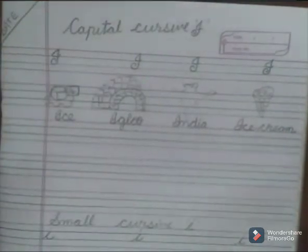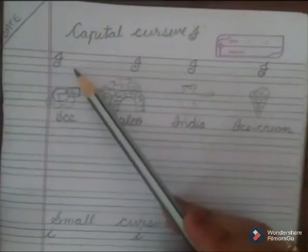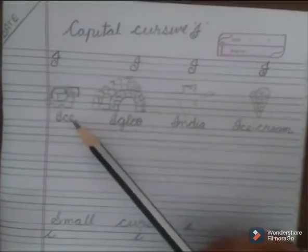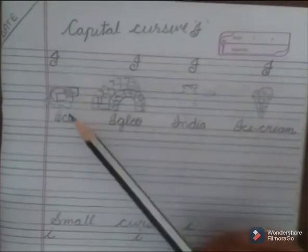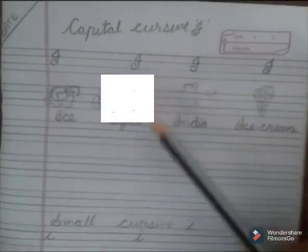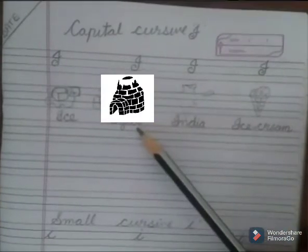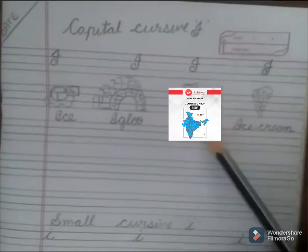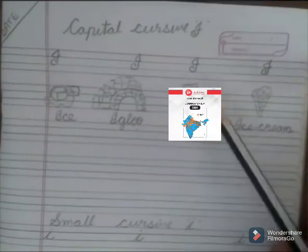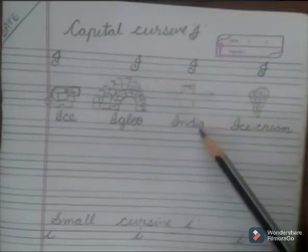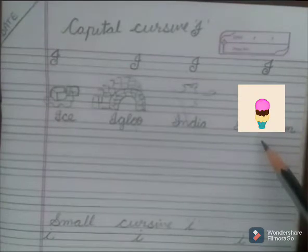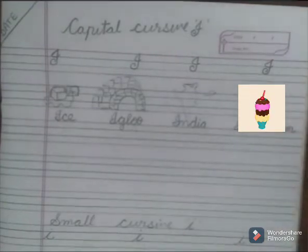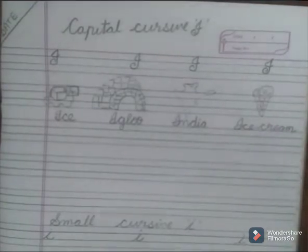Let's start. Capital cursive I. I for ice, I for igloo, I for India, I for ice cream. Let's start writing.